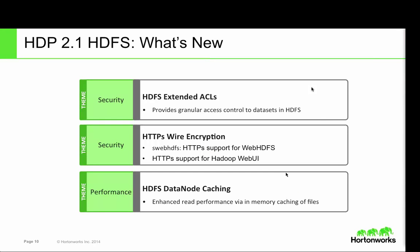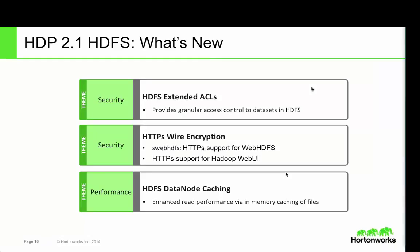Let's get into what's new with HDP 2.1. Starting with the storage layer in HDFS, we've made investments in providing greater control and security — security with granular access patterns to your data sets, extending role-based access controls to groups and users for different data sets, as well as perimeter security. HDFS encryption for data transfer across the wire from clients into the cluster, as well as access to the monitoring UI available in HDFS and YARN.